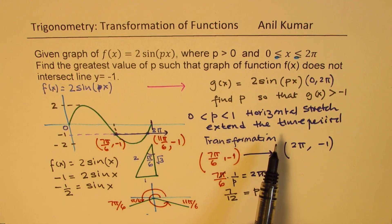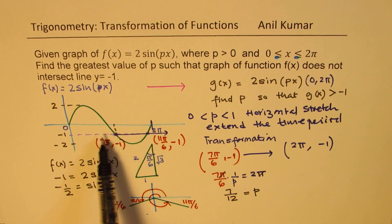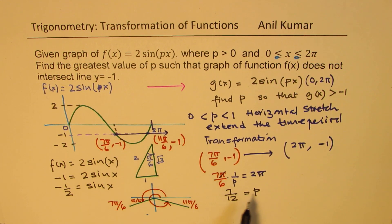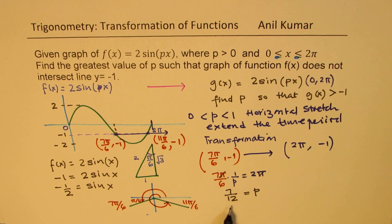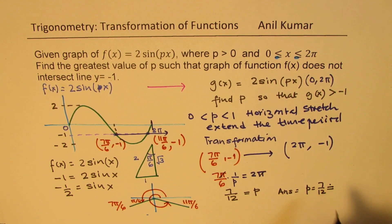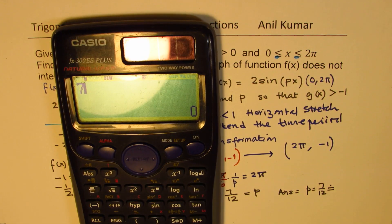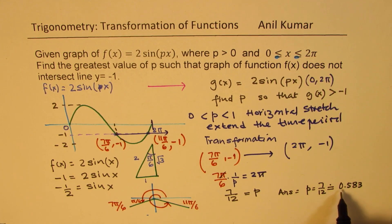You can stretch it more, 7 over 13, 14, 15, whatever. In that case, this point will be stretched further away. However, when p is 7/12, exactly, this point will lie at 2π. So that is the highest value of p. It's a fraction. So that is the greatest value of p, 7/12. So our answer here is p equals to 7/12, which you can approximately write using calculator also. 7 divided by 12 gives you the answer as 0.583. To three significant places, if you want to, then p is 0.583. So that is how this question can be solved.